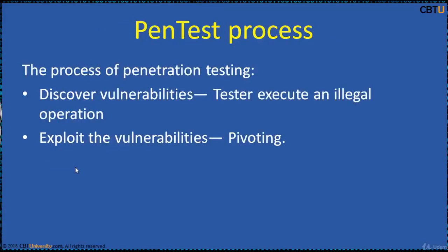The process of penetration testing may be simplified into two parts. First, discover vulnerabilities — combinations of legal operations that let the tester execute and exploit vulnerabilities. Second, specify the illegal operation. Once an attacker has exploited one vulnerability, they may gain access to other machines, so the process repeats — looking for new vulnerabilities and attempting to exploit them. This process is referred to as pivoting.